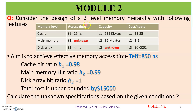Consider the design of a three-level memory hierarchy with the following features: cache memory, main memory, and disk array. The given parameters are access time, capacity, and cost per byte. Main memory is T2. The aim is to achieve an effective memory access time of 850 nanoseconds.